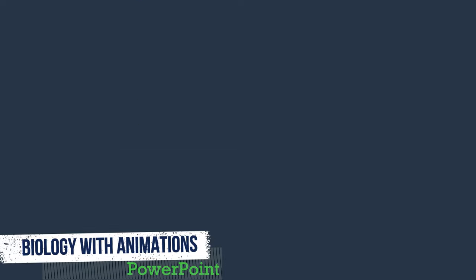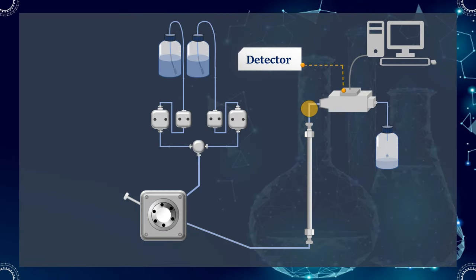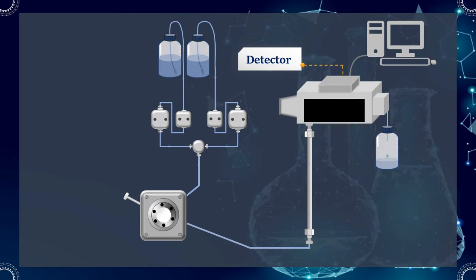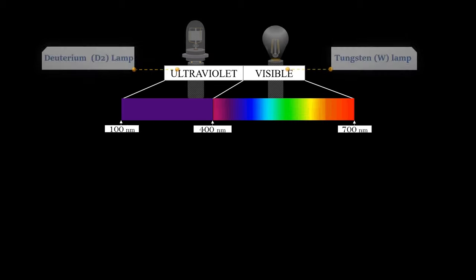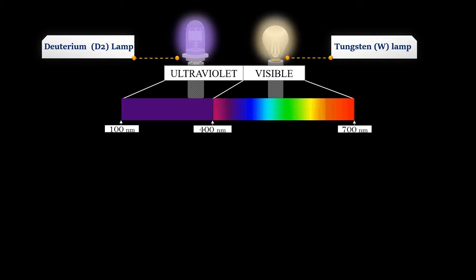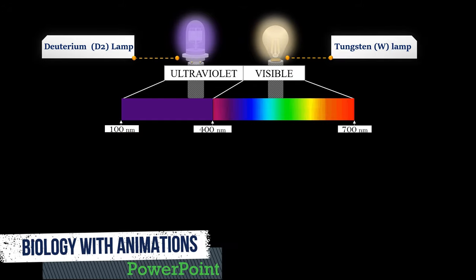As compounds elute from the column, they interact with the detector. Different types of detectors can be used such as the UV-VIS detector, which shows an absorption spectrum in the ultraviolet or visible region. For UV detection, a deuterium discharge lamp as a light source is used. And for components detection in the visible region, a tungsten lamp is used.